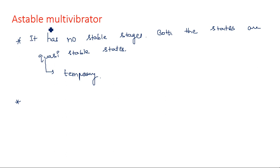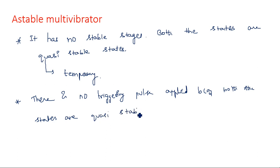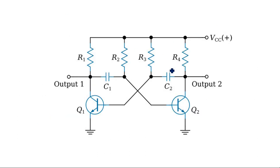How many triggering pulses are needed for an astable multivibrator? The purpose of a triggering pulse is to change the state. But here both the states are temporary quasi-stable states, so there is no triggering pulse applied. Because both states are quasi-stable states, no external triggering is required.